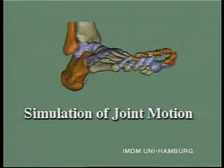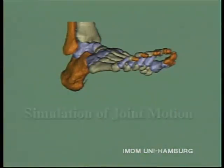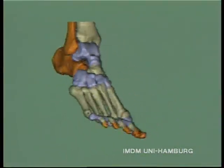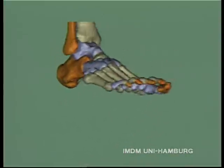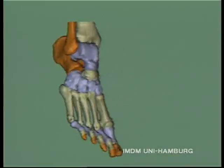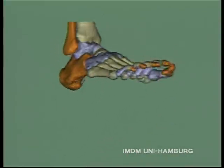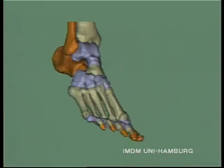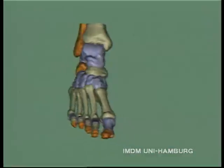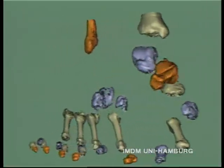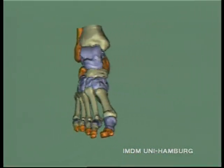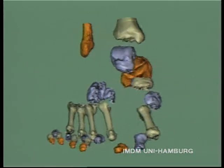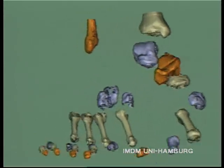Even motion such as that of joints can be simulated. This example shows the motion of an ankle joint. A blow up may illustrate shape and the relation of different anatomic structures.